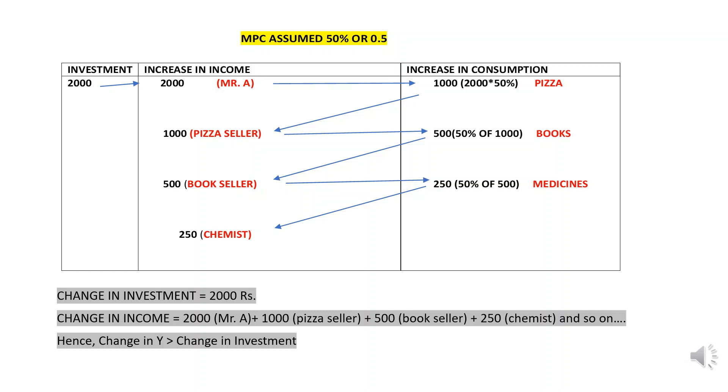Let's have a look at a very simple example for understanding, and thereafter we will move to a theoretical example which will show the working of the investment multiplier that you can use in your exam answers. But before that, let's take a simple example to understand how the multiplier works. For simplicity, I am taking individuals here instead of the whole economy, and smaller amounts.